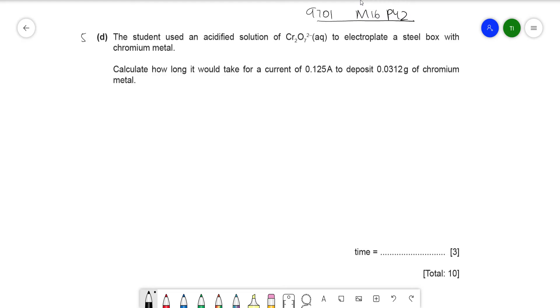Okay, I hope you have attempted the question. If you couldn't, there's no problem. Let's see how this is done. So the question specifies that an acidified solution of Cr₂O₇²⁻ is used to electroplate a steel box with chromium metal. You have to keep in mind that they're using this solution, and what they're trying to form is chromium metal. They're asking for how long it would take, so what will be the time with this much current and this much grams of chromium metal that'll be deposited, right?